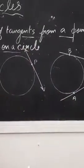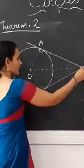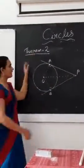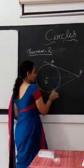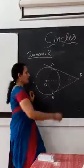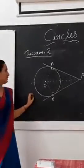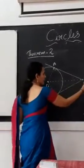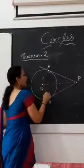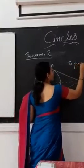These are the three cases: point inside, outside, and on the circle. From an external point P, two tangents can be drawn to a circle. Theorem 2 states that if tangents are drawn from an external point P, the lengths of the two tangents are equal. Given a circle with centre O, P is a point outside the circle, PA and PB are tangents, and OA and OB are radii. We need to prove PA equals PB.